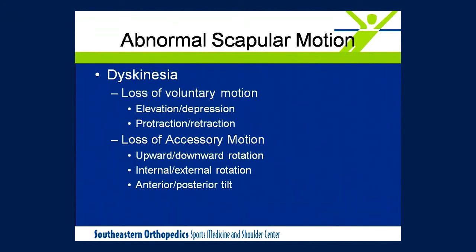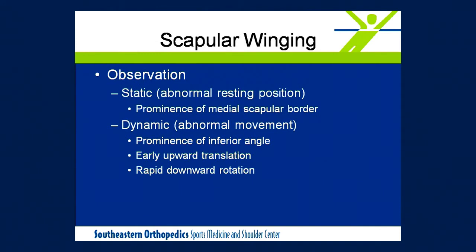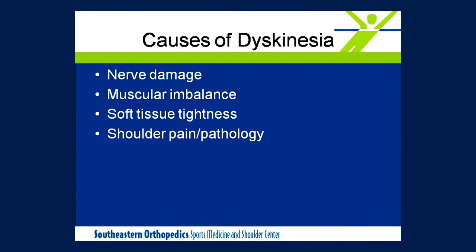So we've gone through the normal motion of the scapula. Let's talk about what happens when things go wrong — abnormal motion. We call this abnormal motion dyskinesia, and this can occur with either voluntary or accessory motions at the joint. Scapular winging is a term we use to describe either a static abnormality, dynamic abnormality with motion, or a combination of the two. Typically with static winging, we see a prominence of the medial border of the scapula, and dynamically, we see a prominence of the inferior angle. There can also be early upward translation as the arm is being elevated, and also a rapid downward rotation.